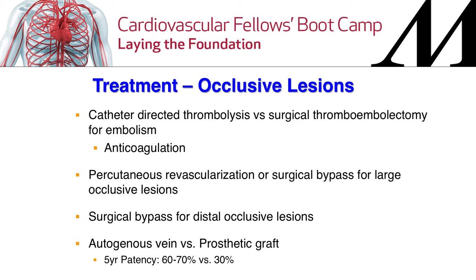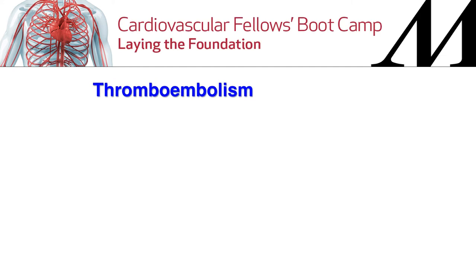For occlusive lesions, treatment options include catheter-directed thrombolysis versus surgical thromboembolectomy for embolic disease, with anticoagulation pre- and post-procedure. Percutaneous revascularization or surgical bypass is used for larger, more proximal occlusive lesions. Distal occlusive lesions do better with surgical bypass than endovascular treatment because the artery is small and requires good inflow. Autogenous vein is preferred over prosthetic, as prosthetics fail much more frequently due to outflow resistance.